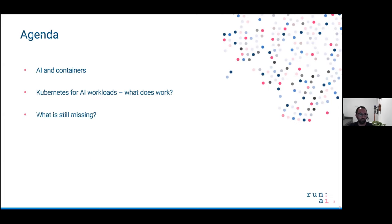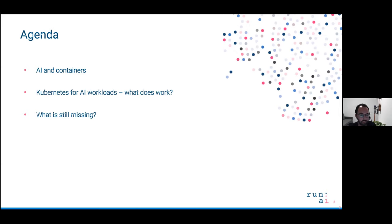Let's start with covering what we're going to cover today as part of the agenda. We'll start by talking about the world of AI and how it's adopting containers. I assume that most of you are familiar with containers, maybe mostly for deploying microservices as part of application deployment. Then we'll talk about how the world of AI and deep learning is also adopting containers. Then we'll talk about Kubernetes and how it can help us orchestrate containers for running AI workloads — what works and what doesn't.